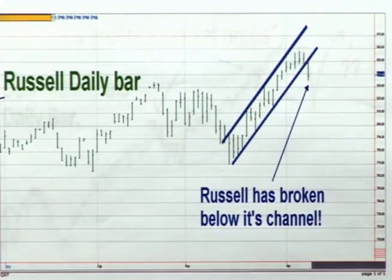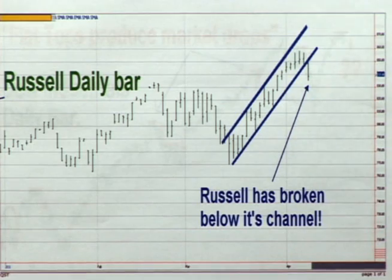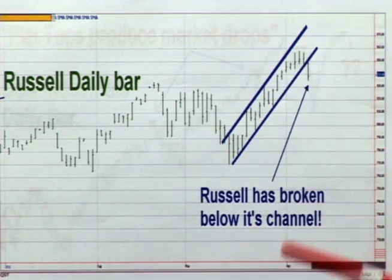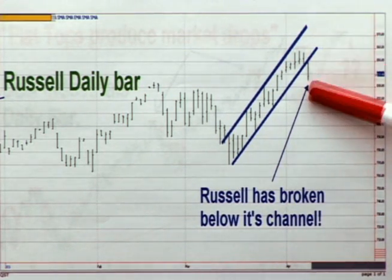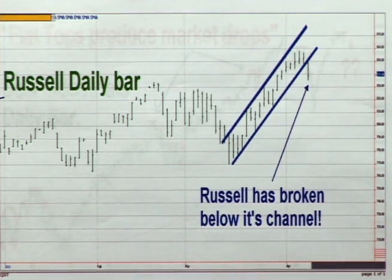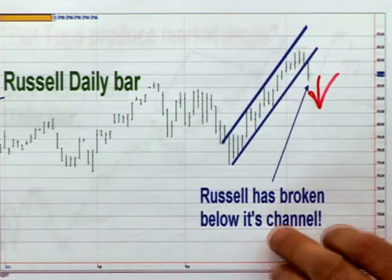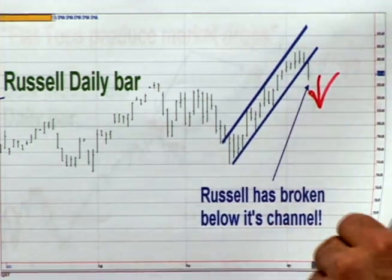Next on the block is the Russell, one of our leaders right behind the transportation average with the NASDAQ. The Russell has fallen out of its wonderful parallel channel. It has broken down and it looks bearish for trading Sunday through Monday. So now you see the leaders are looking bearish.